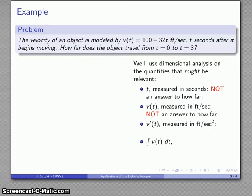v prime of t—that's the derivative of v(t). So remember how that's going to be measured: that's going to be units of v(t), feet per second, over units of t, seconds, and that's going to work out to be feet per second squared.